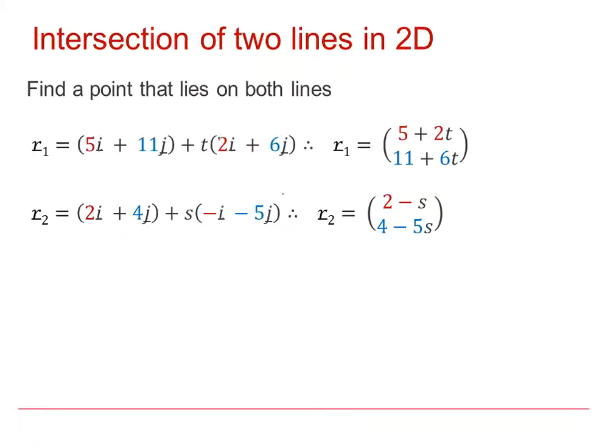Really important to notice that when we are looking at more than one straight line, we need to use a different parameter. So the first straight line has a parameter T, and the second straight line has a parameter S.